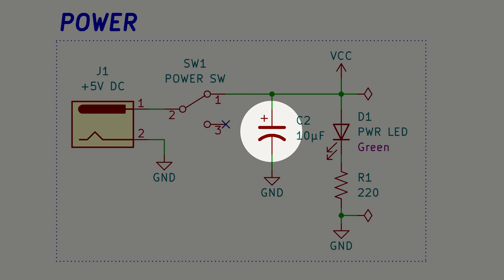It smooths ripples, stores energy, filters out noise, and improves transient responses. The LED simply serves as an indicator to show if power is applied to the circuit. The dropping resistor is crucial to control the current flowing through the LED, ensuring it stays within safe operating limits.